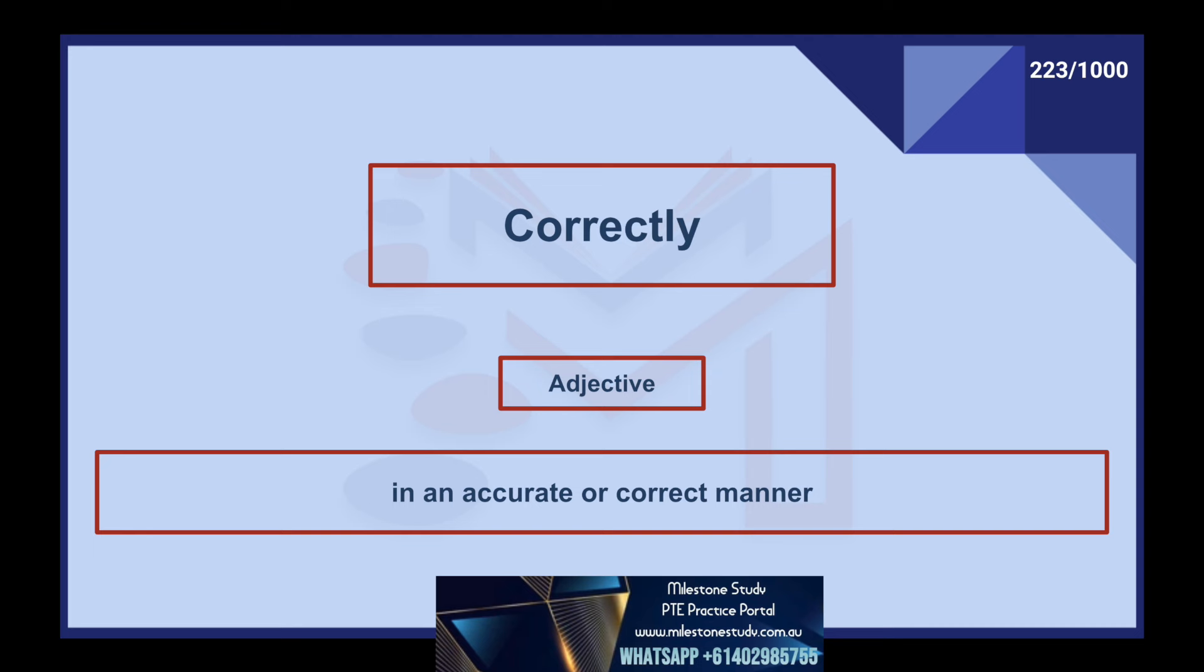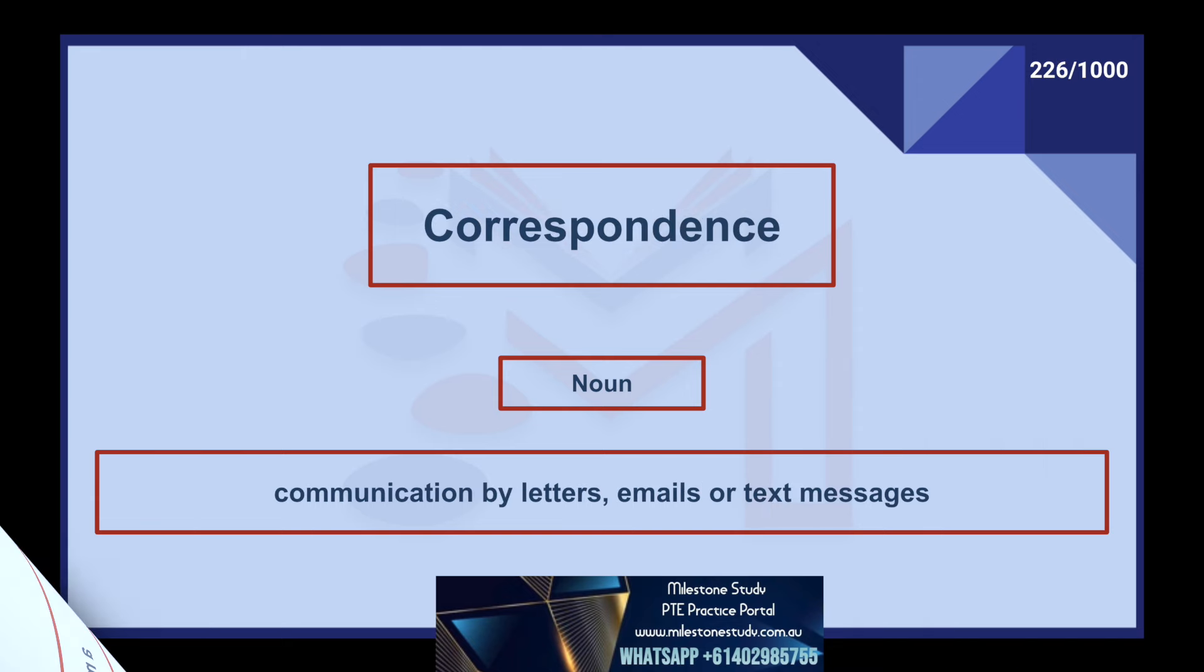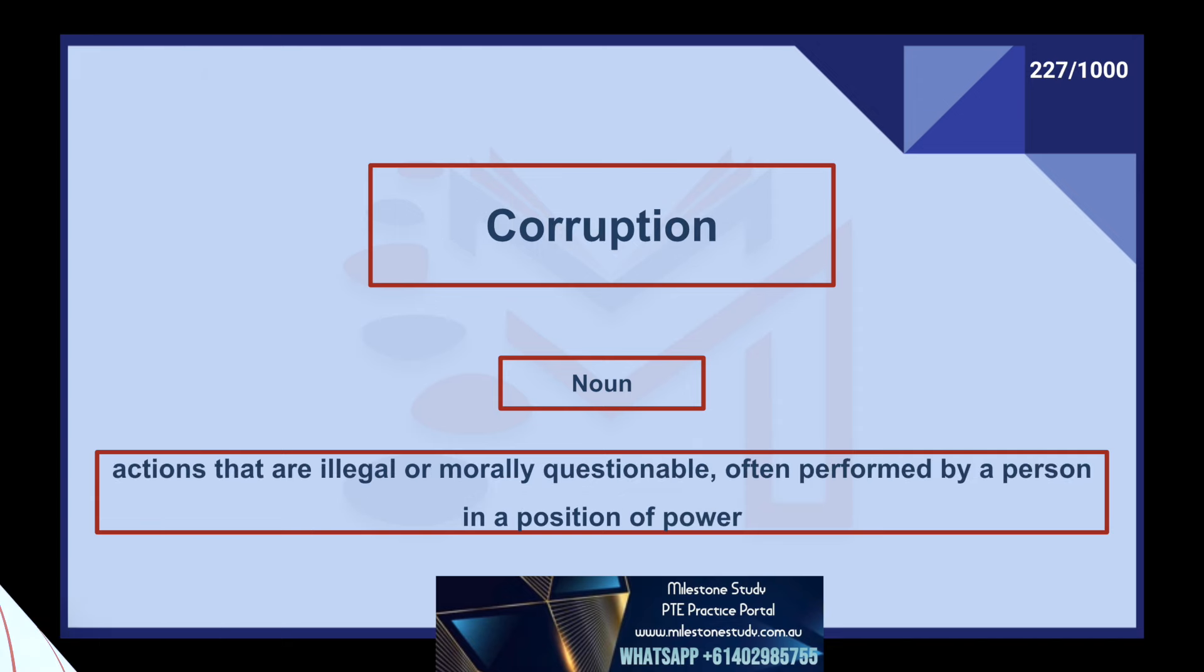Correctly, adjective: in an accurate or correct manner. Correlation, verb: to show the relationship between two items or events. Correlation, noun: a measure of the relationship between two variables. Correspondence, noun: communication by letters, emails, or text messages. Corruption, noun: actions that are illegal or morally questionable, often performed by a person in a position of power.